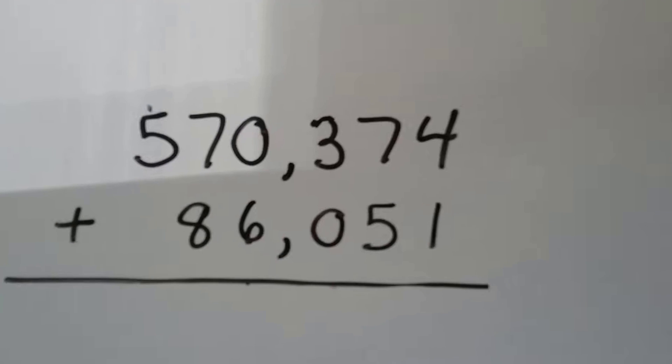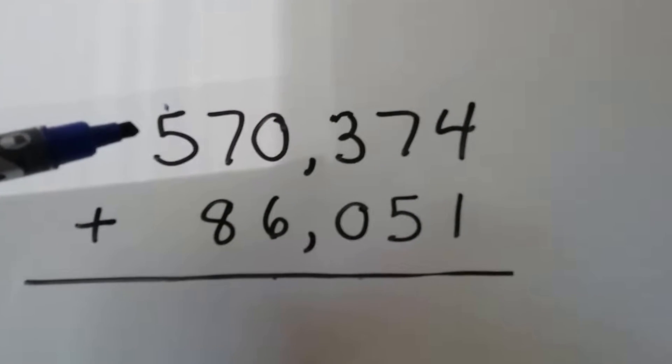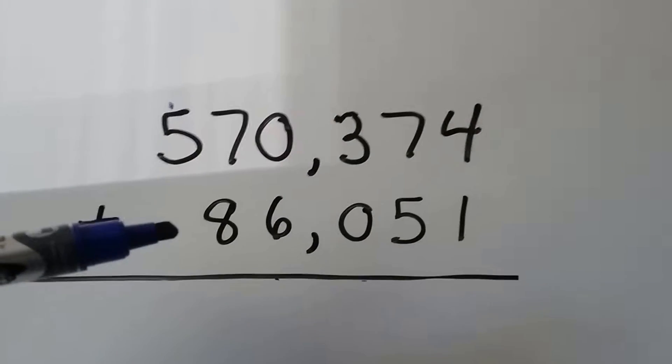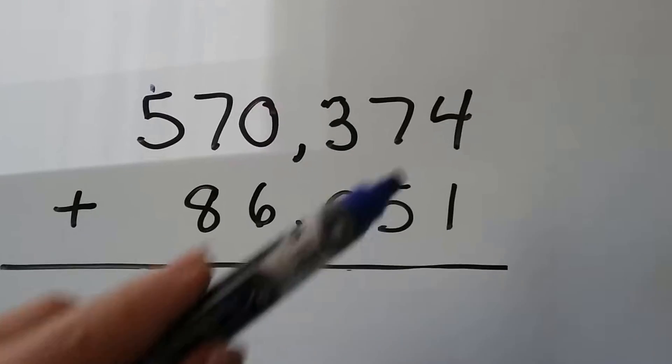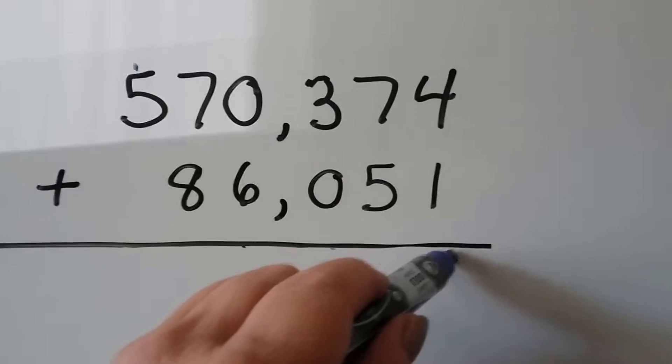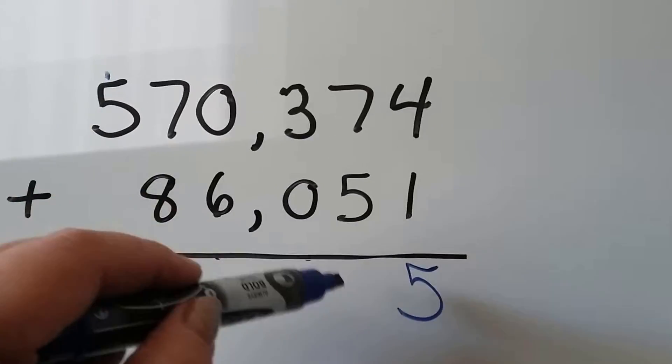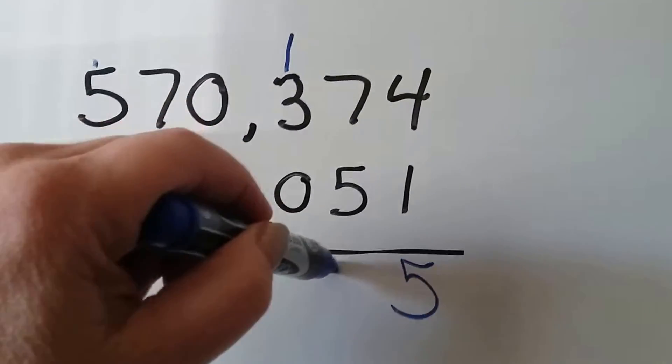All right. So let's try doing this in equation vertical form. We've got 570,374. And we need to add 86,051. So we start with the ones place. 4 plus 1 is 5. 7 plus 5 is 12. So we can't put a 12 here. So we regroup and put the 1 from the 12 up here and the 2 down here.